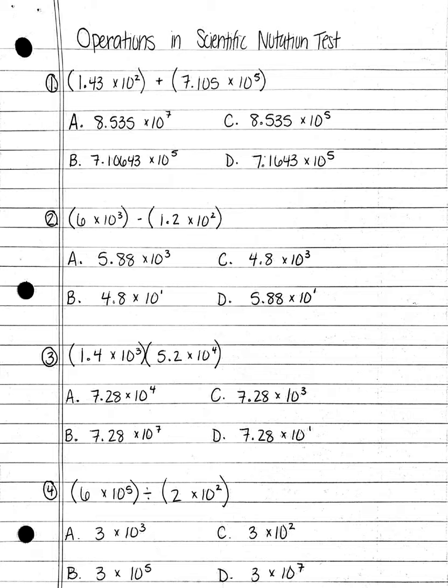Number 1. 1.43 times 10 squared plus 7.105 times 10 to the fifth equals: A. 8.535 times 10 to the seventh power; B. 7.10643 times 10 to the fifth power; C. 8.535 times 10 to the fifth; or D. 7.1643 times 10 to the fifth.